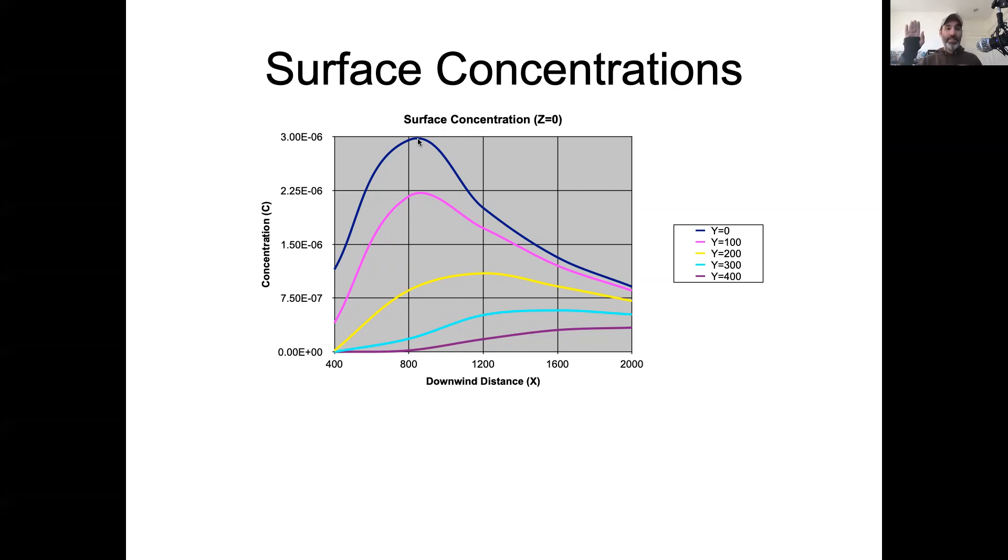We can also infer that the actual point that it reaches that maximum is going to vary with all the things we've talked about. It's going to vary with the things that affect the dispersion coefficient. So under unstable atmospheres, you'll get more mixing and thus you'll peak sooner and then disperse out. But you'll also dilute out more quickly. And with stable atmospheric conditions, you're going to disperse more slowly in the vertical direction, which means it's going to take longer until you hit that peak, but it's also going to be slower to disperse outward. So the concentrations will go down more slowly.